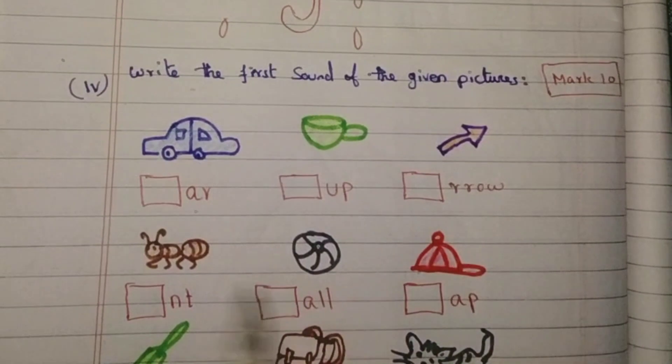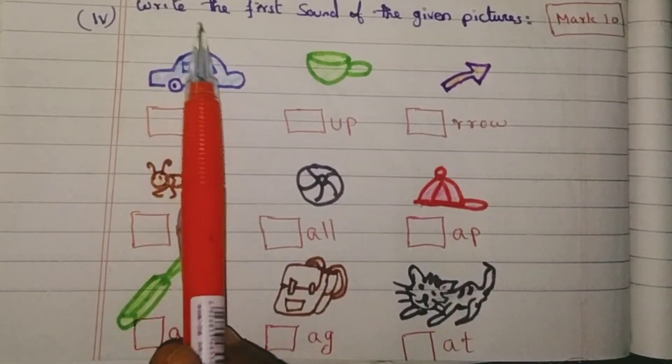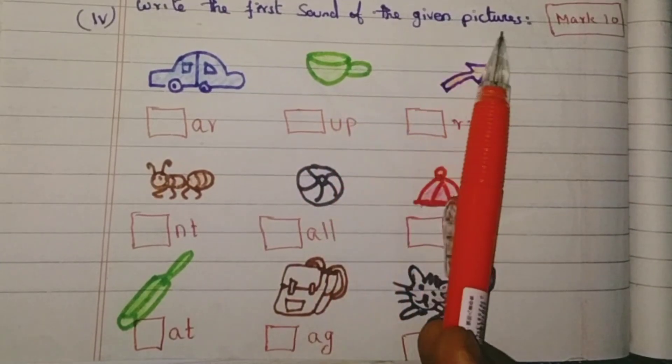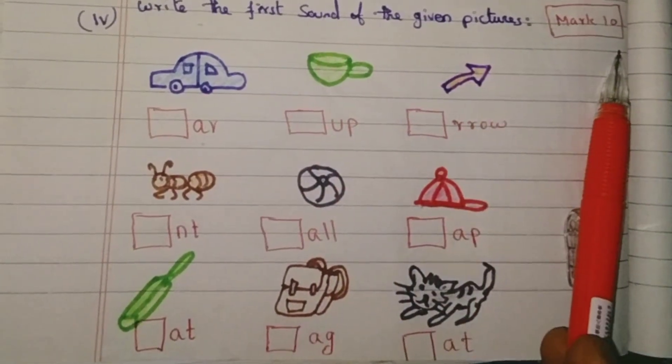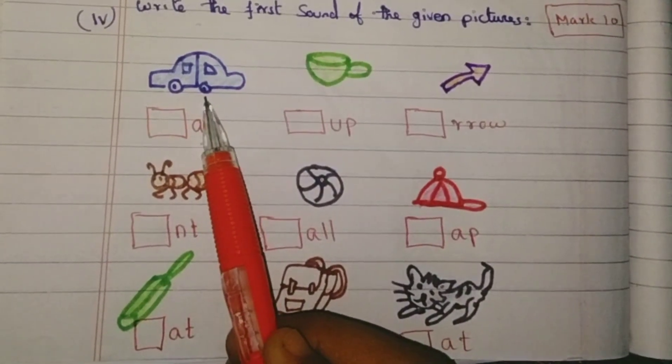Fourth question. Write the first sound of the given pictures. Mark 10. First sound, write. First picture, car. C for car.